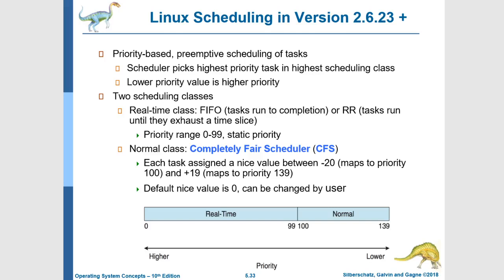Now we're going to look at how scheduling works in an advanced operating system, namely Linux. The Linux scheduler is priority-based and preemptive. The scheduler will pick the highest priority task in the highest scheduling class, and there are two classes. The real-time class is where we need to meet specific time deadlines — we need very responsive tasks — and in this class, scheduling can be done with FIFO or round-robin. The priority range for this class is 0 to 99.